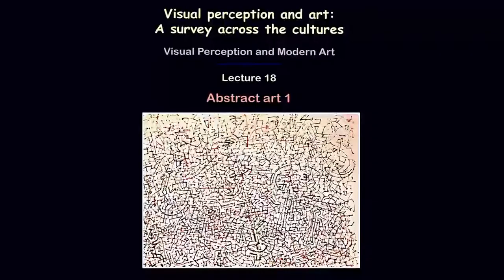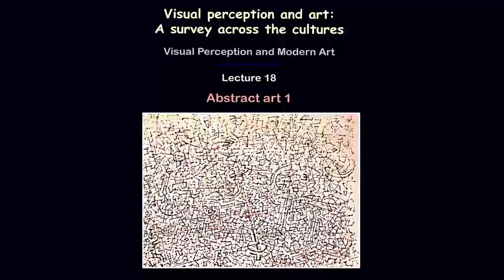Hello viewers, welcome to MOOCs online course on visual perception and art: a survey across the culture. This is the 18th lecture. This one and the next lecture, lecture number 19, will be dealing with the idea of abstraction in art and how abstract art appears as a major problematic issue with regard to our visual perception. Let me give you a definition of what abstract art is.